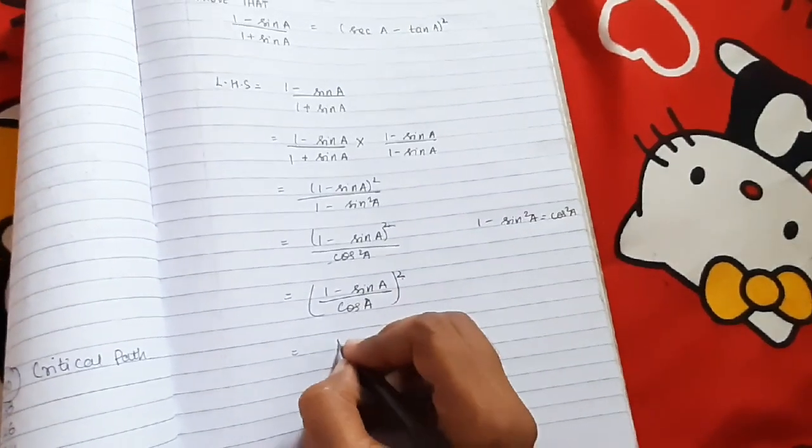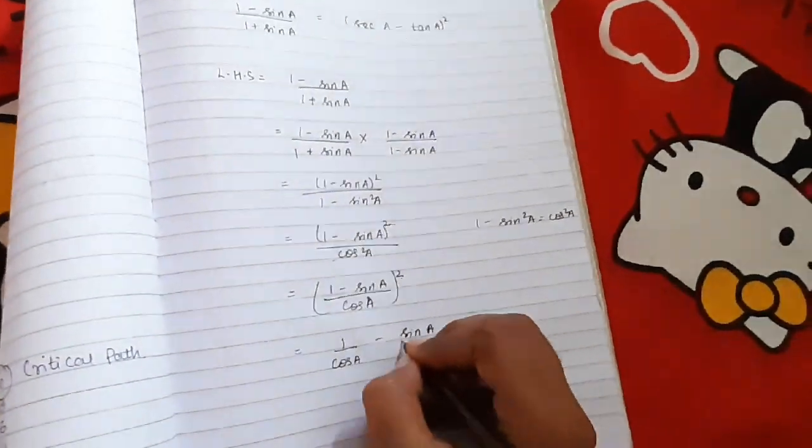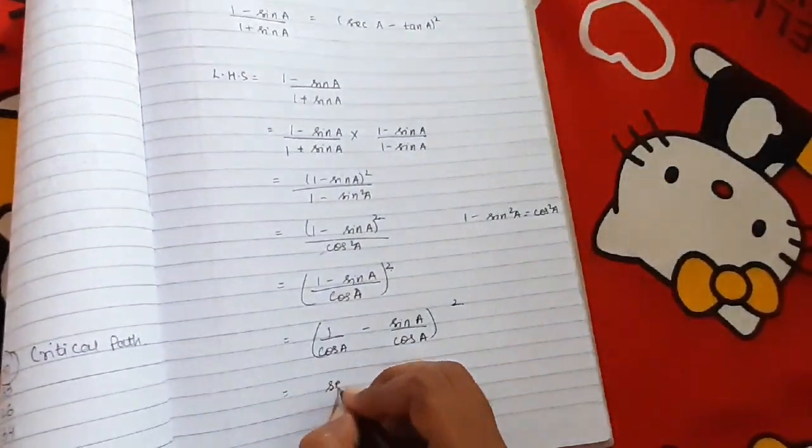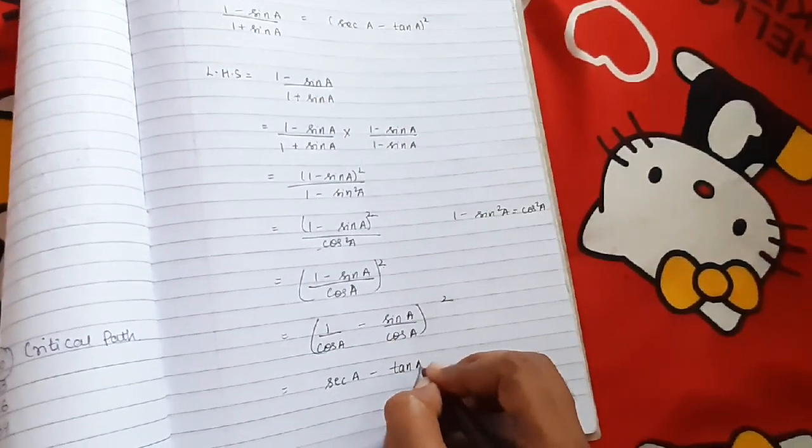So it will be (1 / cos A) - (sin A / cos A). 1 / cos is nothing but sec A minus tan A.